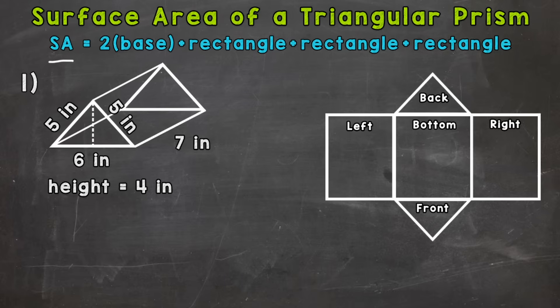Then we have plus a rectangle, plus a rectangle, plus a rectangle. So each one of those rectangles means the area of a rectangle. So let's jump into number one here, and the first thing we need to do is find the area of the base here, and then multiply it by two. So our bases are triangles for a triangular prism. This front triangle here and the back. And again, they are the exact same size and shape.